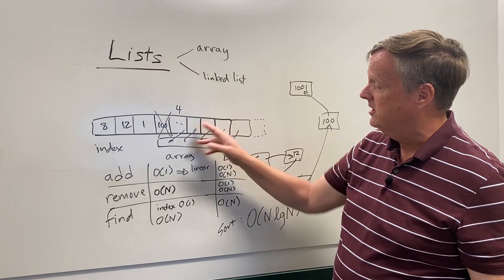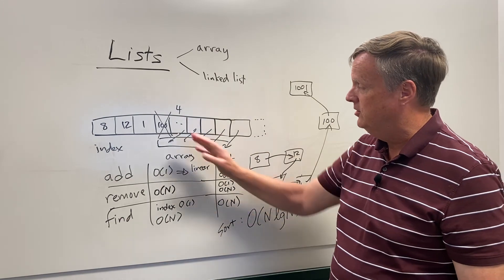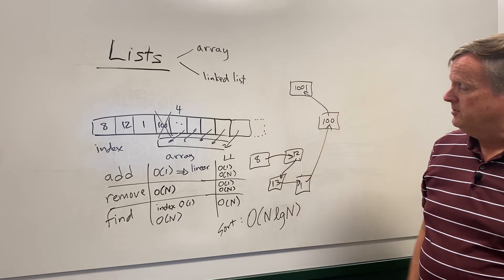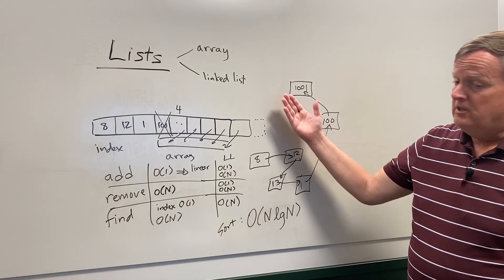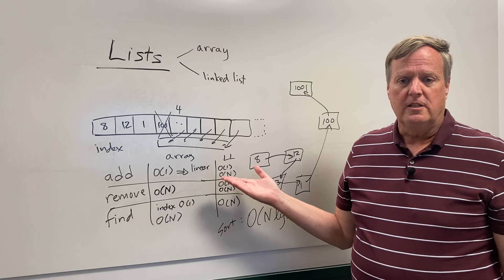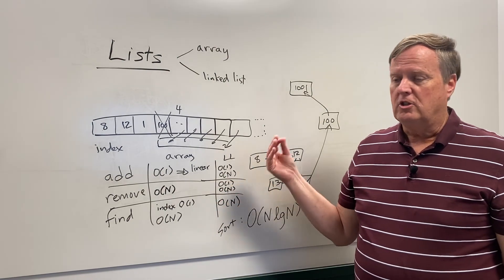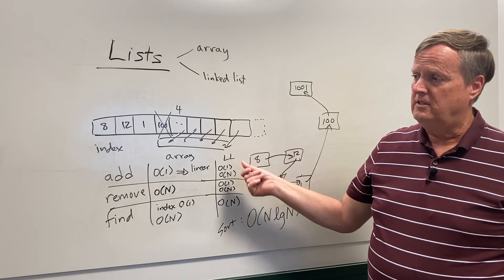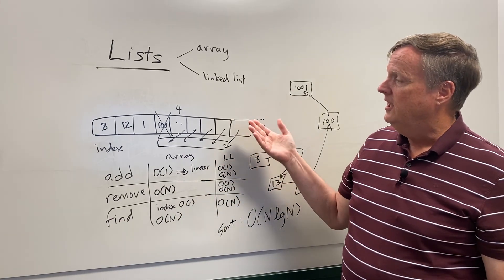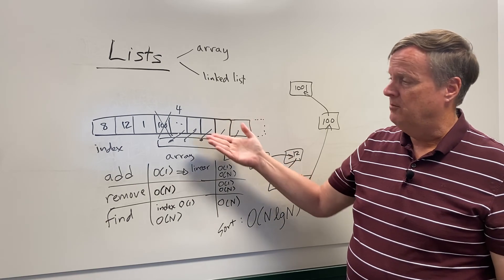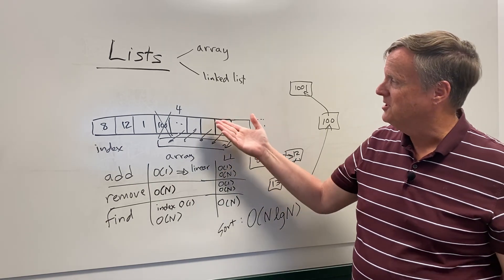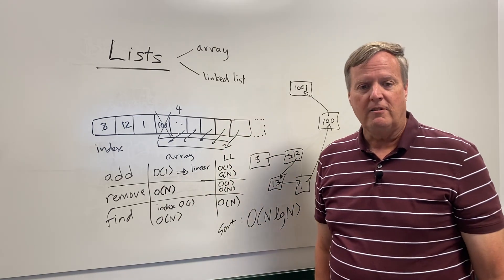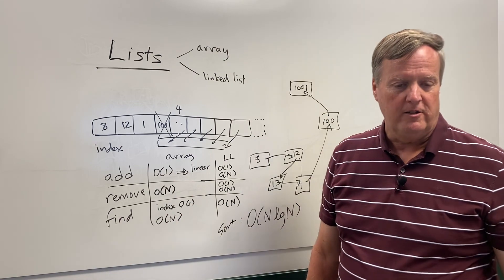Once the array is sorted, you can do a binary search to find elements much more quickly. I covered that in the complexity video. So that's lists — the basic things you need to know. Learn this cold, you're going to need it without thinking. Most languages handle arrays with almost no effort. The next video will cover binary search trees.